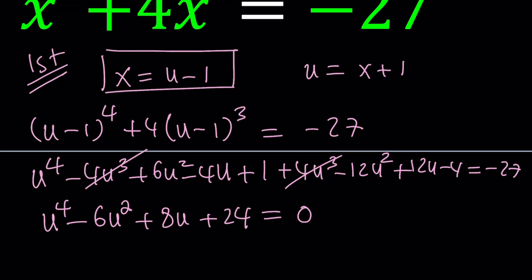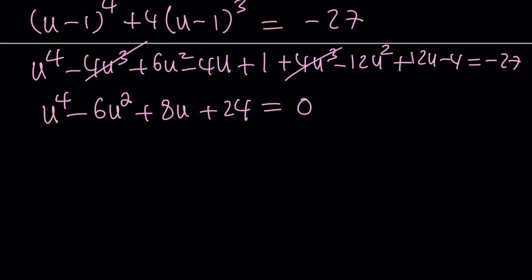Now at this point, we can try RRT, which is Rational Root Theorem, look at factors of 24, or we could use the quartic formula, or we can try to factor it. Obviously, the quartic formula is pretty complicated.